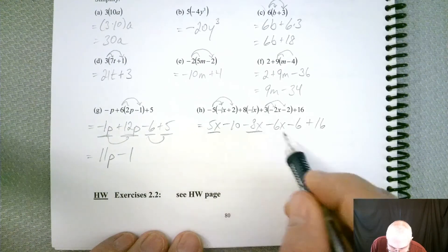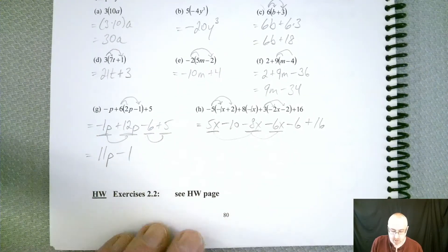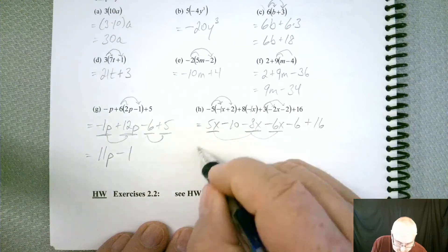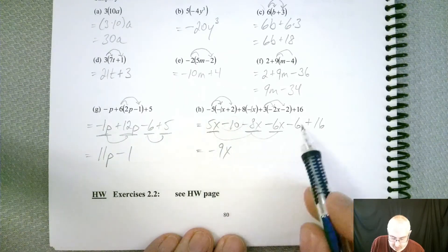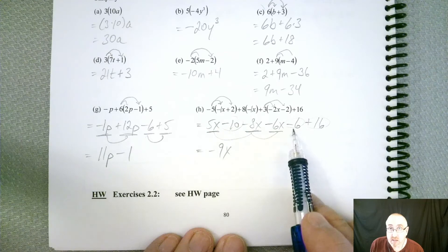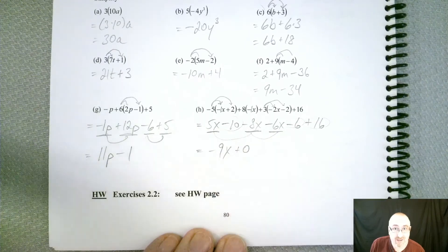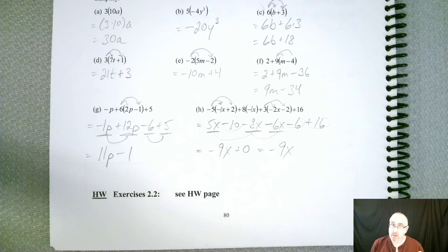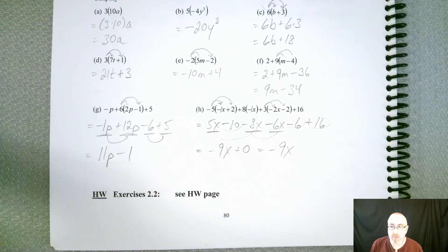So all the parentheses are gone. So now we can combine our like terms. Looks like we got a few x's that we can combine. So we got all three of those. So what does that combine to? Well, 5 minus 8 is negative 3. A negative 3 and a negative 6 is negative 9. So negative 9x. All right. And then we got our numbers. So we got negative 10, negative 6, and a positive 16. Negative 10 and negative 6 is negative 16, right? Negative 16 and positive 16. Negative 16 is zero. So your answer for this one is just negative 9x. All right. So we're building. We're building. All right. Stay tuned for the next video where we start doing some other cool stuff. See you in a minute.